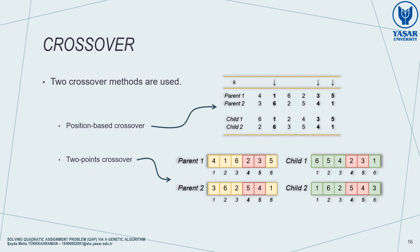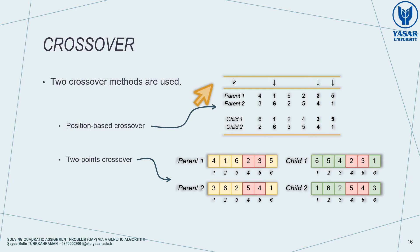Crossover is the way to create children. We use two crossover methods: position-based crossover and two-point crossover. In position-based crossover, K indices are selected arbitrarily, and the genes at these indices are transmitted to the children directly. Then, the empty genes of the children are filled according to the order of the other parent's genes. In two-point crossover, which is simpler, we select two points to cut the chromosome and replace with the other parent's chromosome piece. The rest of the genes are filled according to the order of the corresponding parent's genes.